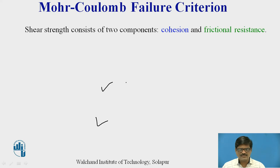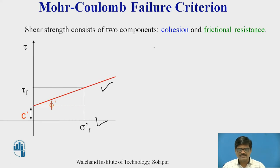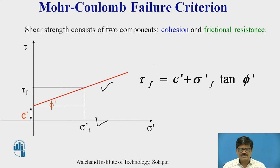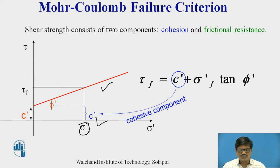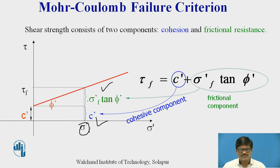Before we start, we know that the Mohr-Coulomb equation is basically graphically represented with normal stress on the x-axis and shear stress on the y-axis. The equation is: shear stress equals C plus sigma tan phi. So here two components are present — a cohesion component and a friction component — and this shear strength is the total ordinate, being the contribution of cohesion and the friction angle taken together.